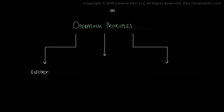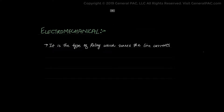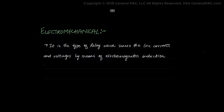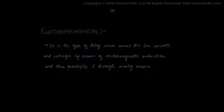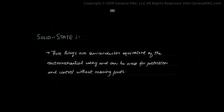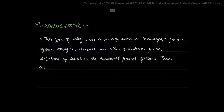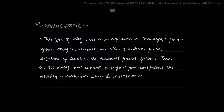There are three main operating principles for protective relays: electromechanical, solid-state, and microprocessor. Electromechanical is a type of relay which senses the line current and voltage by means of electromagnetic induction and then quantifies it through analog means. Solid-state relays are semiconductor equivalents of electromechanical relays and can be used for protection and control without moving parts. Microprocessor relays use microprocessors to analyze power system voltage and current and other quantities for the detection of faults in the industrial process system. They convert voltage and current quantities to digital form and then process the resulting measurements using the microprocessor.